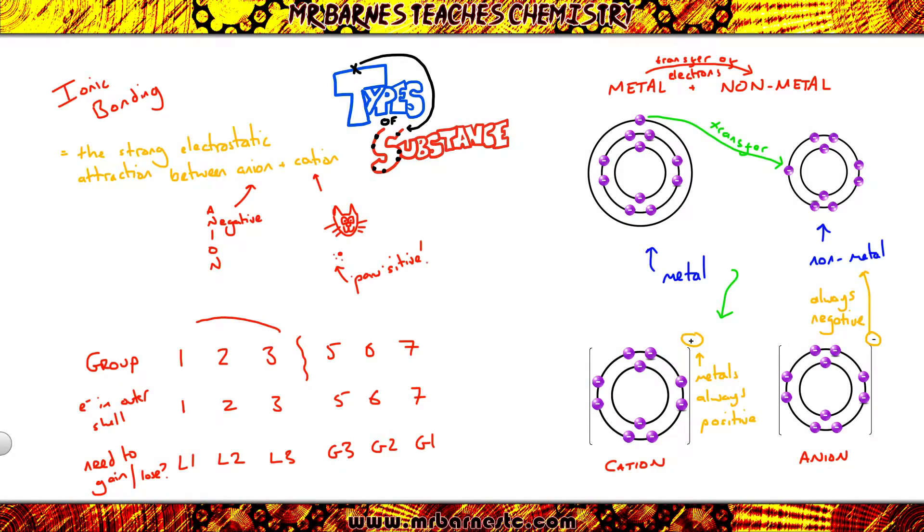So for groups one, two, and three, which are losing electrons, they are losing negative electrons, so they become positive. So all metals make positive cations, and all non-metals are gaining negative electrons, so they become negative overall. Once you've known that, the charge is easy. So if it's group one, plus one. Group two, two plus. Group three, three plus. Group five, three minus, because you've got three negative electrons added. Group six, two minus, two negative electrons added, and group seven, one minus.